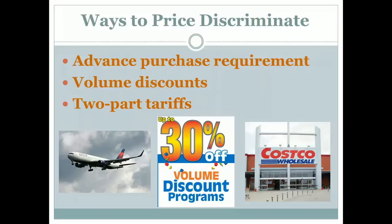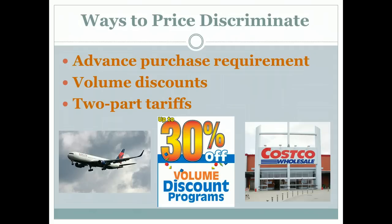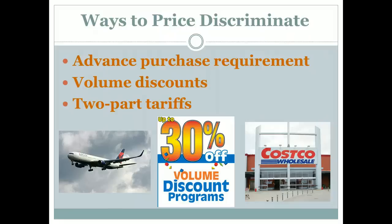There's also something called a two-part tariff. You often see that at Costco or Sam's Club, where you have to pay an entry fee through a membership to be able to shop at the store, and then you purchase your goods. In essence, that makes the purchase price of the first good you buy extraordinarily high — much higher than you might have been willing to pay otherwise. That helps the price-discriminating company capture more of your consumer surplus and increase their profit. As you buy more things, it becomes relatively less expensive because you're spreading the cost of the membership across a number of goods, so it also acts as a volume discount. The goal in all of these cases is to get people to pay the maximum price they're willing to pay for any particular good.